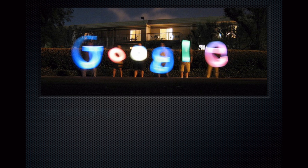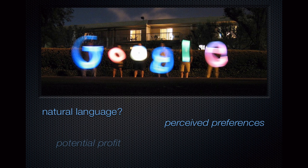Now, Google retrieves, ranks, and displays results as Google does. Perhaps the process is mysterious, but it should suffice to recognize that Google uses your own search history as well as the commercial potential of particular items to rank your retrievals. In other words, both your perceived preferences and the potential for profit affect the order in which your results are displayed. And this is, in fact, a danger for natural language searching.